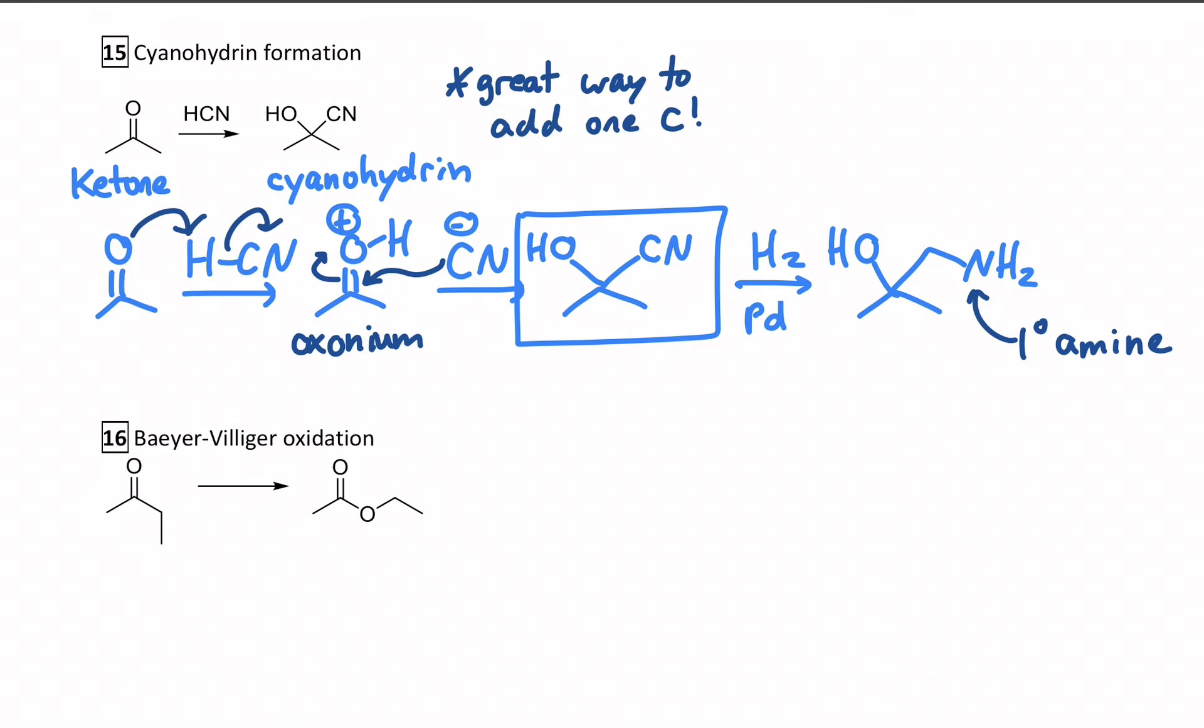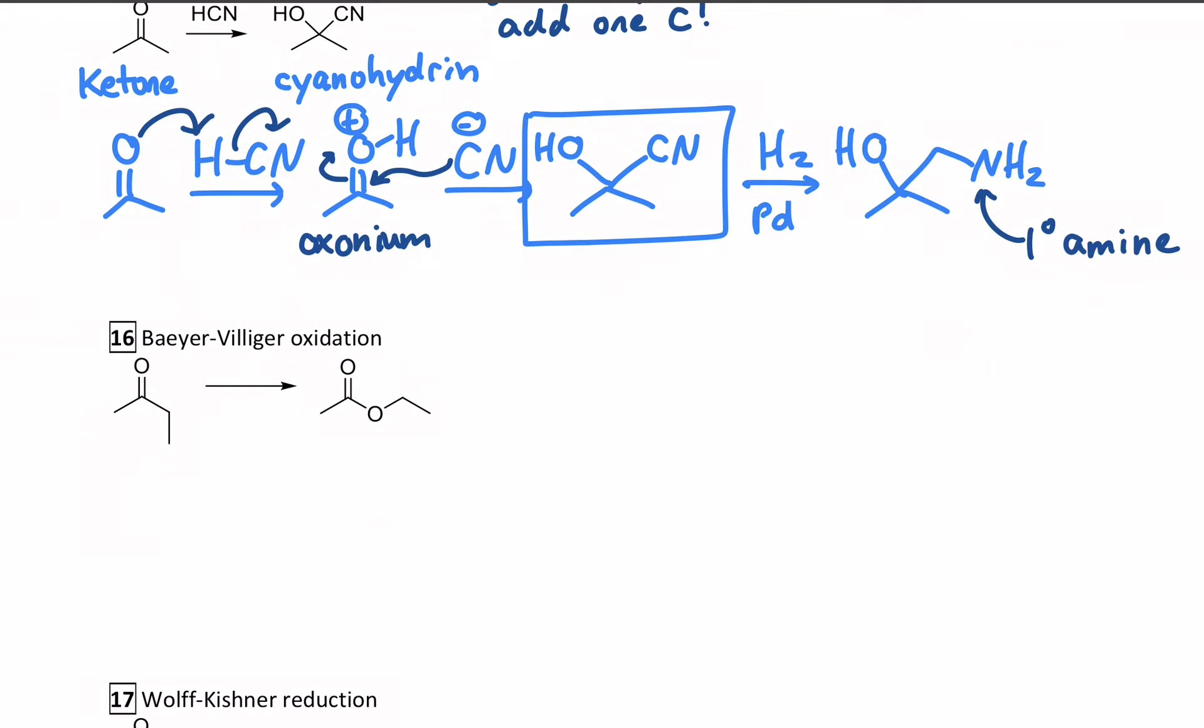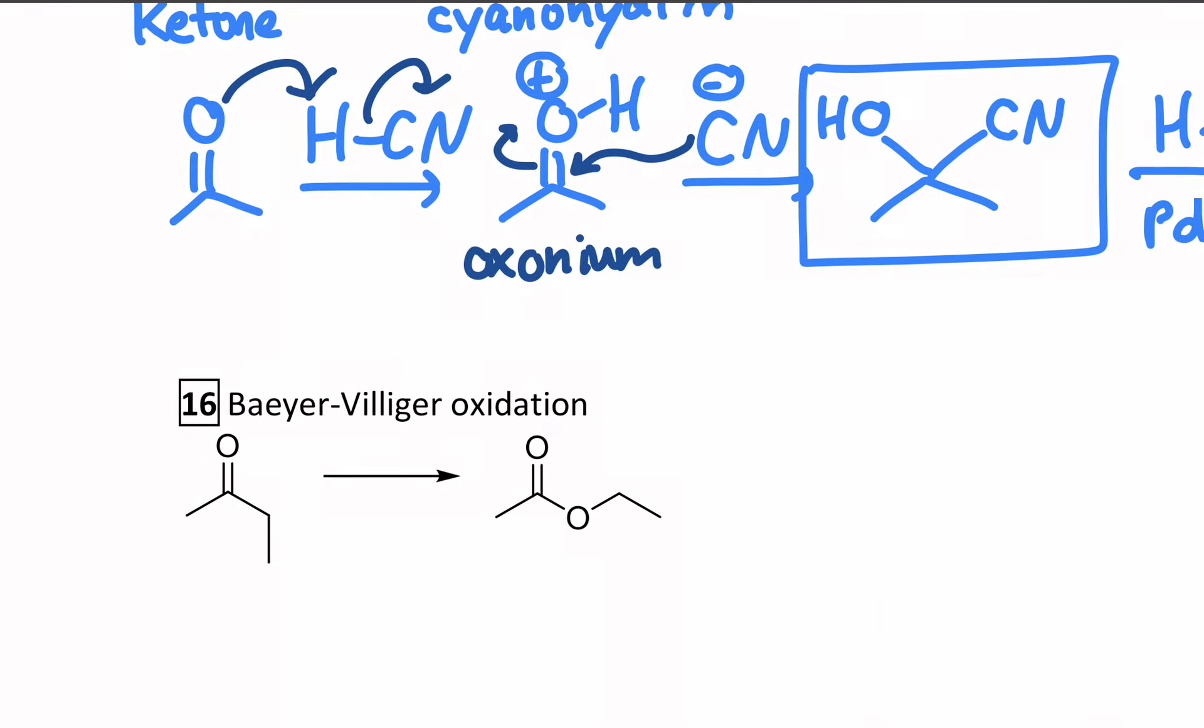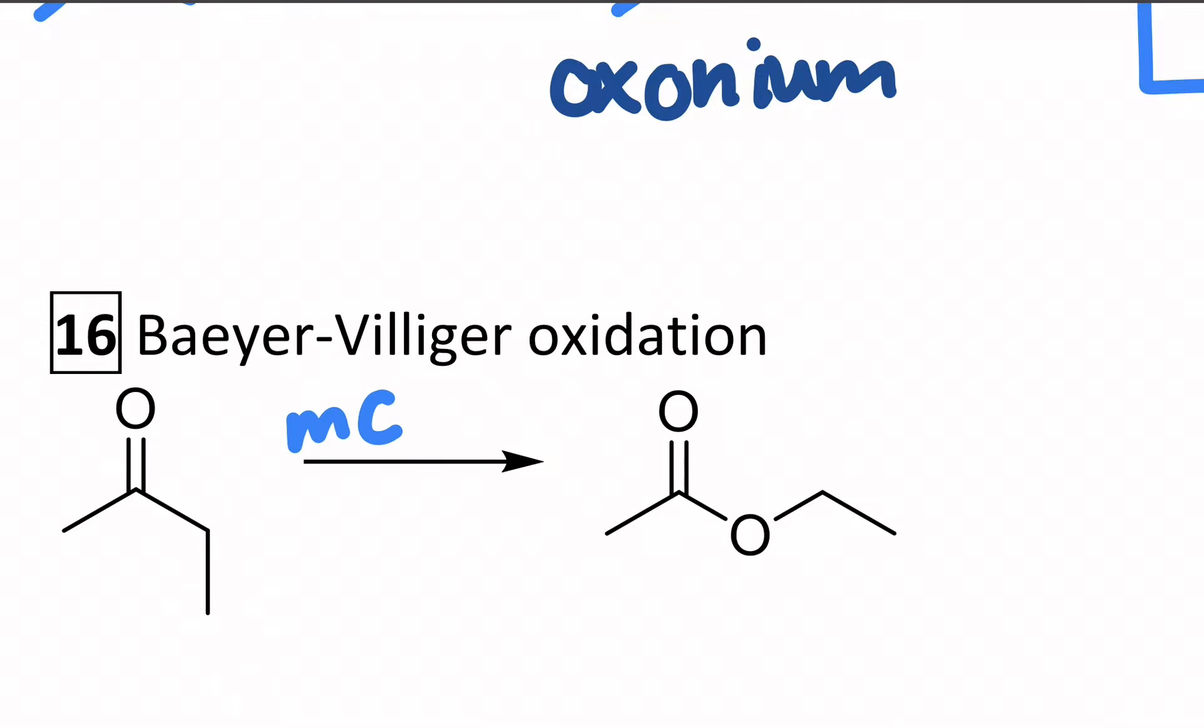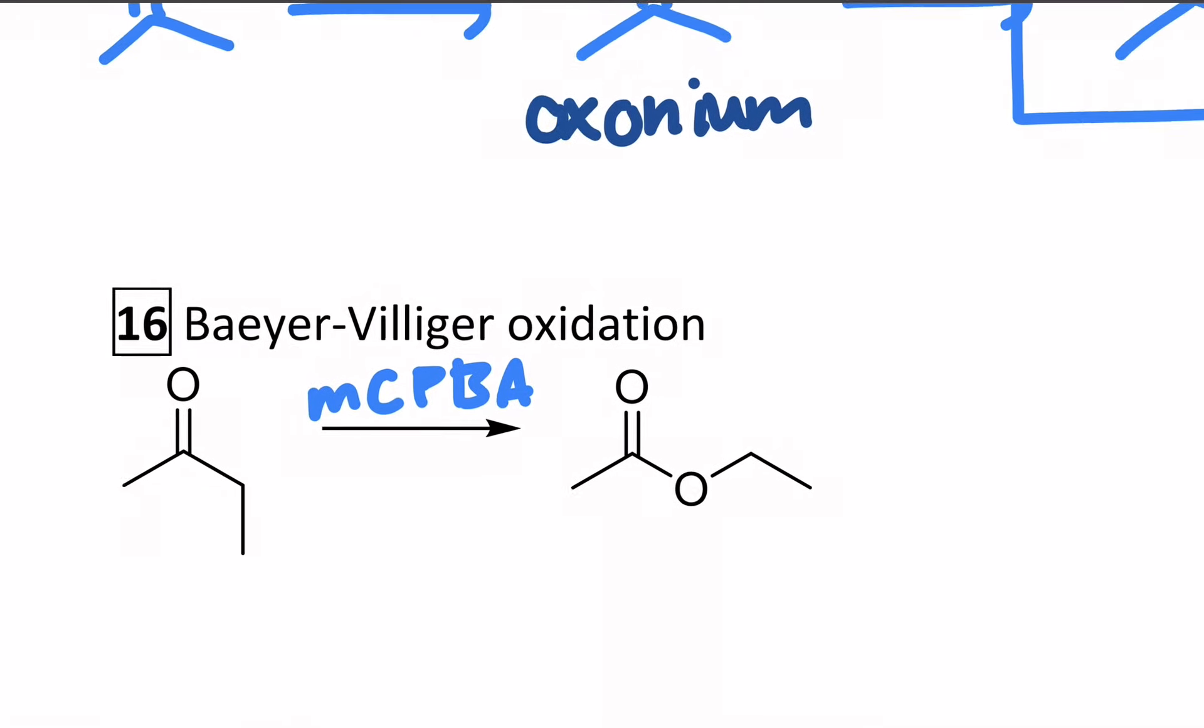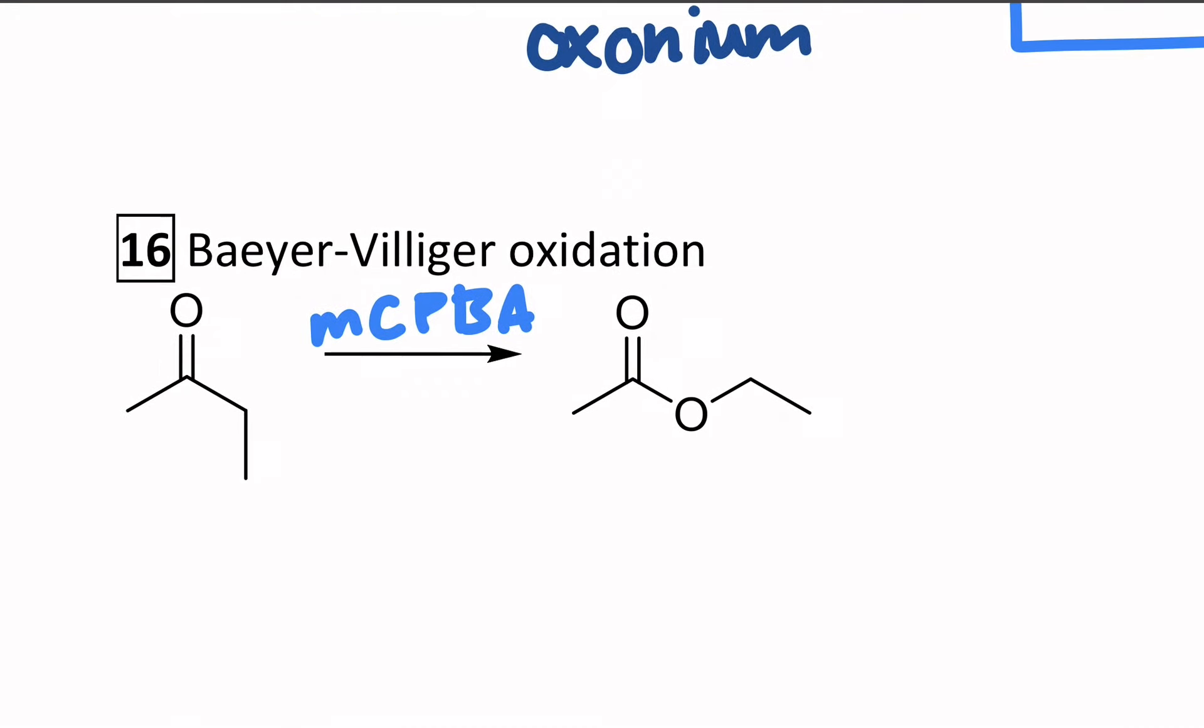Okay, there's two others. The third one is a Baeyer-Villiger oxidation. This one uses a reagent that we've seen before but not for this purpose - it uses a peracid, MCPBA, which you might remember makes epoxides, those three-membered rings from alkenes. However, if we have a ketone instead of an alkene, this is the first method we know to make an ester. It inserts an oxygen in between the ketone carbon and the carbon right next to it, the alpha. So we take this ethyl and we move it outside of a new oxygen.